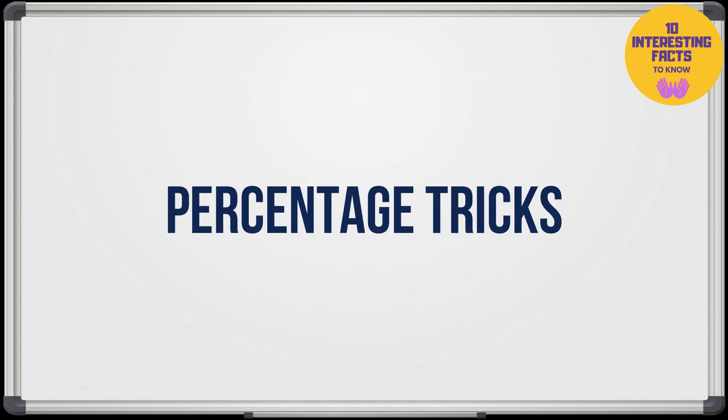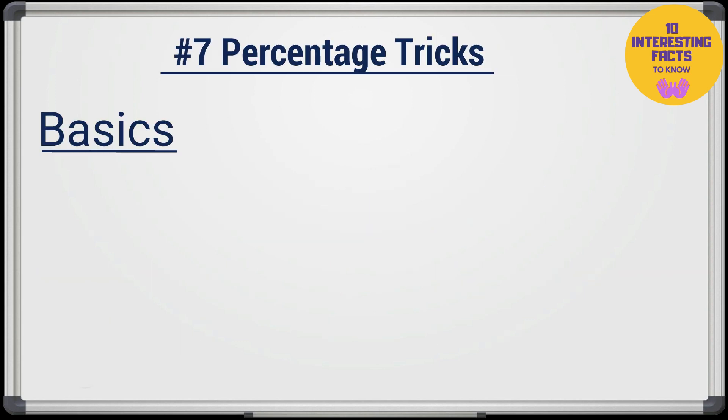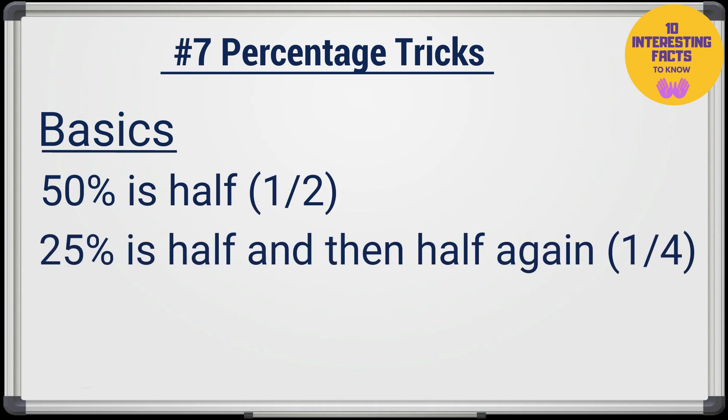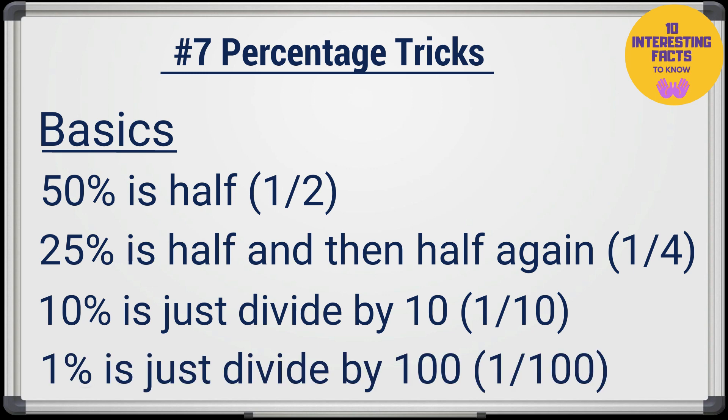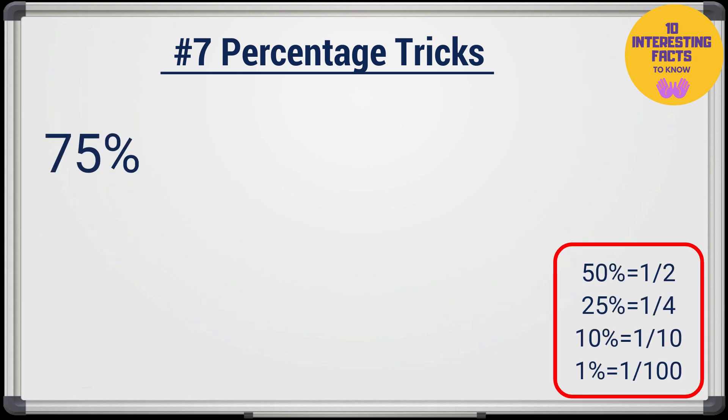Let's look at some percentage tricks now. There are some basics as we all know. 50% is half, 25% is half and then half again, that is one fourth. 10% is just divide by 10 or 1% is just divide by 100. Now we can work out any other percentage using these rules. 75% you can break it as 50% plus 25%.